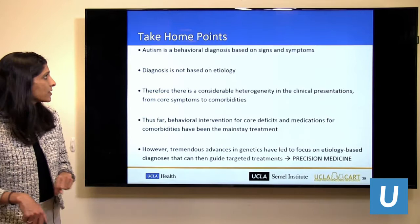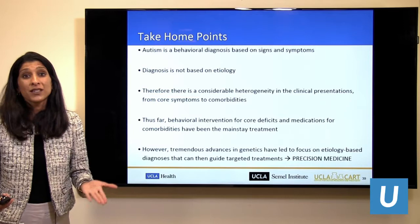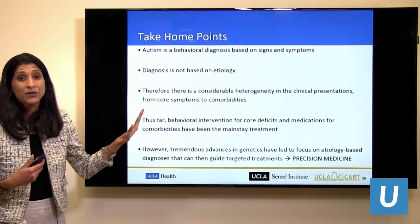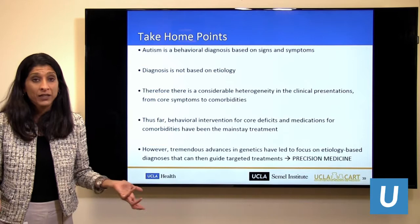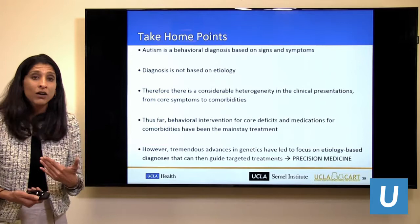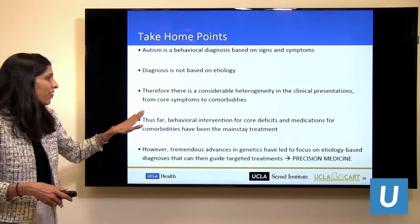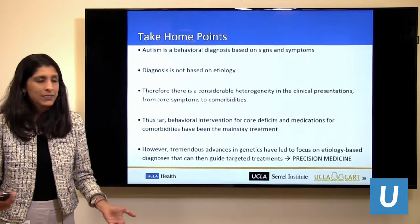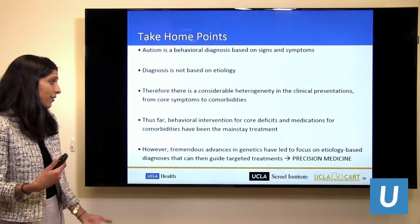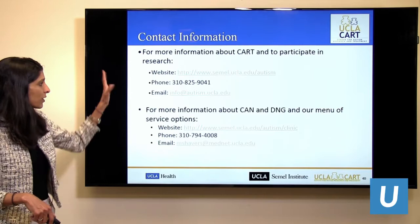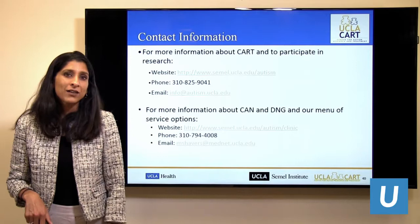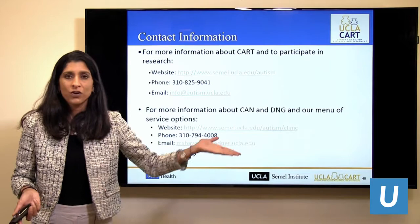Some take-home points: autism is a behavioral diagnosis based on signs and symptoms, not on cause or any blood test. Because it's not based on etiology, there is considerable heterogeneity in presentation, making it challenging as a clinician and as a parent to give perfect guidance on prognosis or treatments. Thus far, behavioral intervention for core deficits and medications for comorbidities have been the mainstay of treatment. Tremendous advances in genetics have led to a focus on etiology-based diagnosis, which we hope will guide targeted precision medicine treatments. Our autism center has clinical services and many research opportunities from early infancy through adulthood.